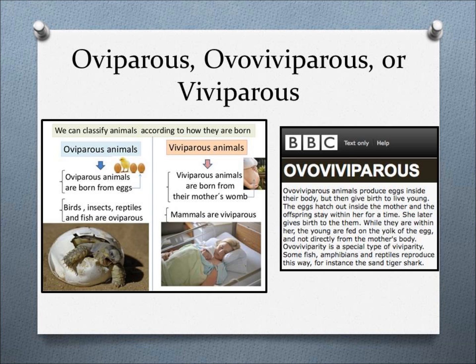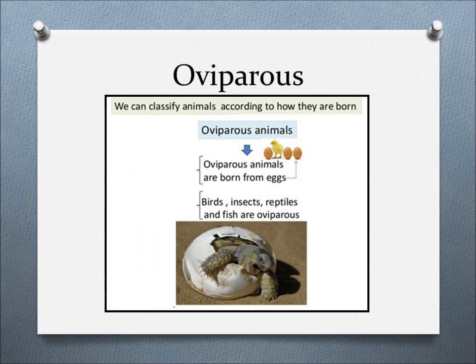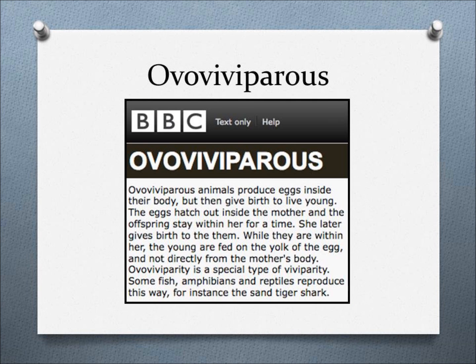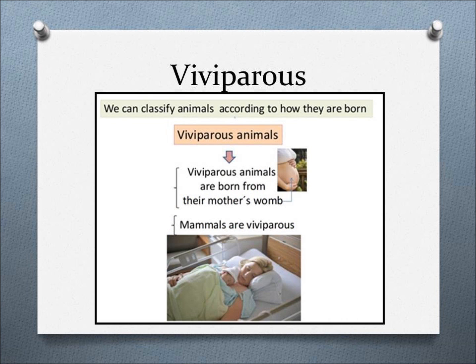Let's talk about reproduction. Insects, like most animals, are either oviparous, ovoviviparous, or viviparous. If an animal is oviparous, it means they lay eggs. Ovoviviparous animals lay eggs, but the eggs stay inside the mother when they hatch. If the animal is viviparous, the animal gives live birth, not with eggs.